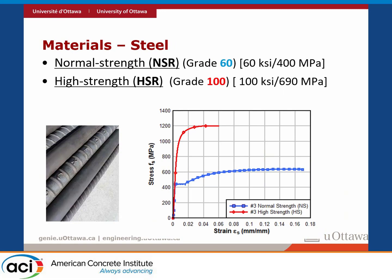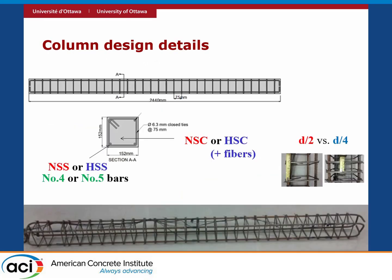The regular typical steel used in 99% of construction is Grade 400 MPa steel — Grade 60 ksi here in Canada. The high-strength steel is Grade 100 ksi or 690 MPa. The actual stress-strain curve is quite above the 690 MPa specified yield strength. It has quite a different response — it's always nonlinear, with no yield plateau. It has much higher strength, but you lose a bit on ductility. That's why we wanted to study how it behaves.